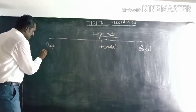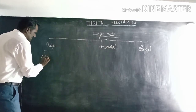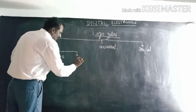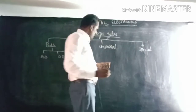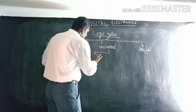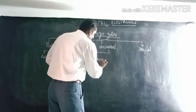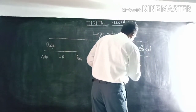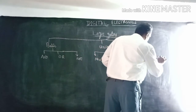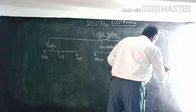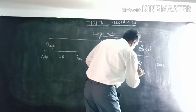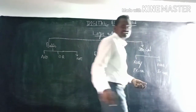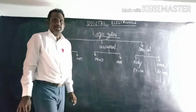The basic logic gates are: AND gate, OR gate, and NOT gate. The universal gates are: NAND gate and NOR gate. The special gates are: XOR gate and XNOR gate — where EX stands for 'exclusive.'